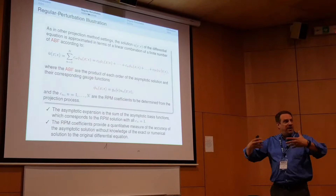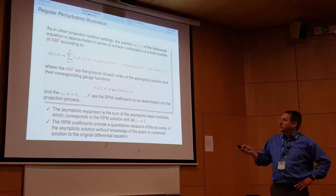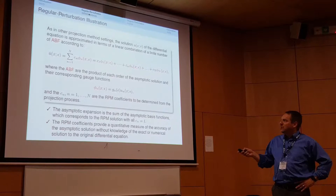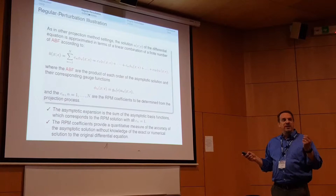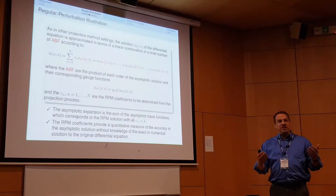Now we put this in the context of a Galerkin projection method. The trial function U-bar is the sum of RPM coefficients CN times the basis functions. The basis functions include both the gauge functions and the asymptotic terms at each order. This is really where the power comes in: the small parameter epsilon, the physical parameter, is contained within the basis functions themselves.